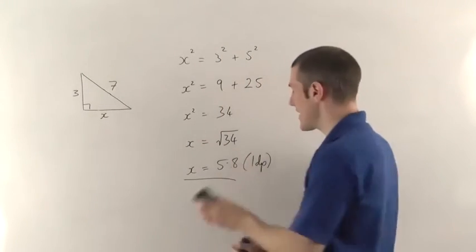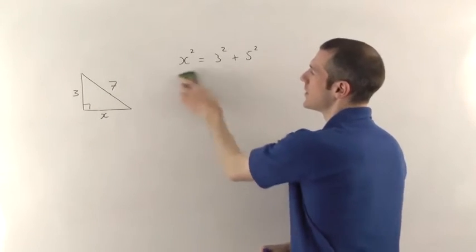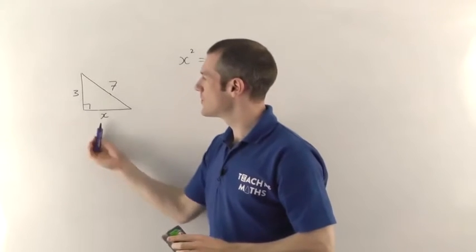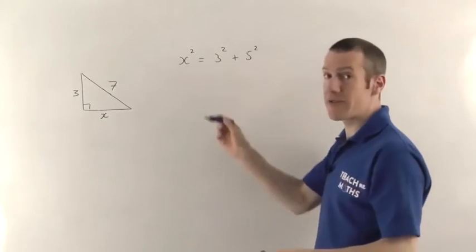We've got to work out how long this side is. Now it's more or less the same thing, but you just have to be a bit careful, because now the two smaller sides, one of them we don't know. So that's just going to change the way we write this down a bit.